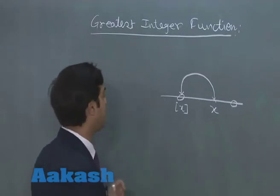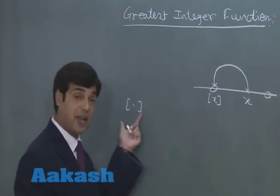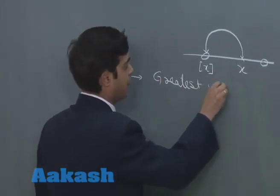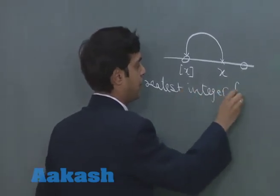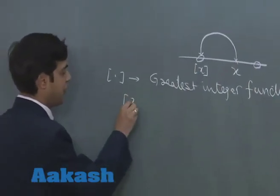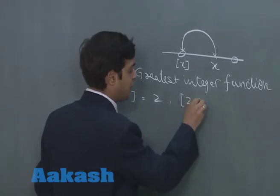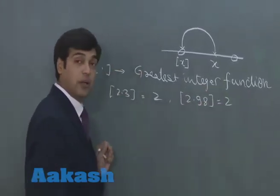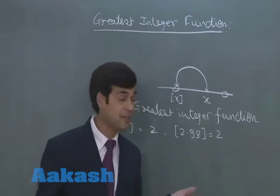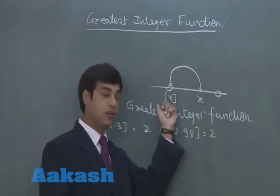So, let us consider some examples. We denote the greatest integer using box brackets — this symbol. If the number is 2.3, its greatest integer is simply 2. If the number is 2.98, greatest integer is again 2. Note: we are not saying 2.98 is approximately equal to 3. Since 2.98 lies between 2 and 3, the previous integer is 2, so the answer is simply 2.